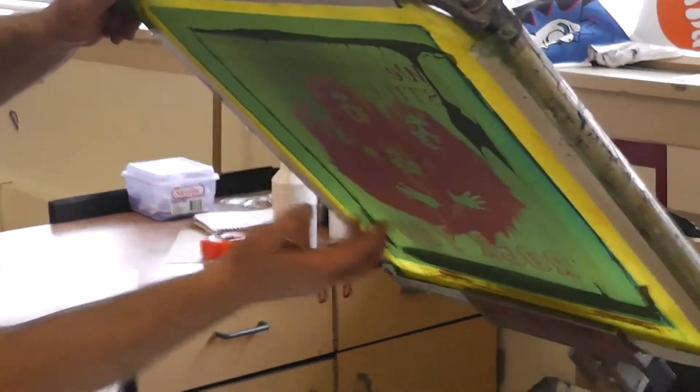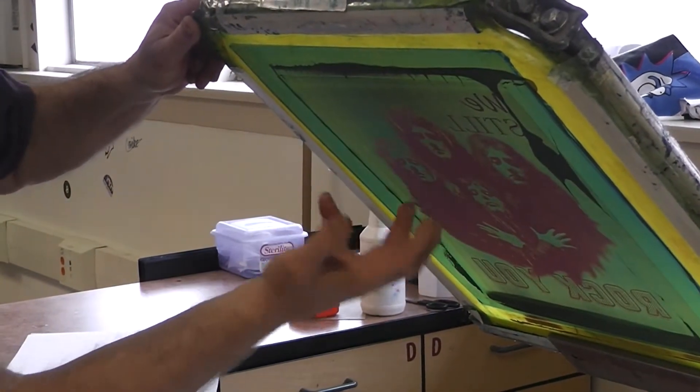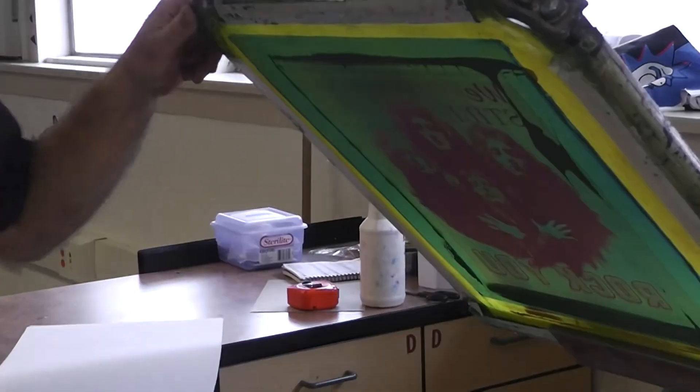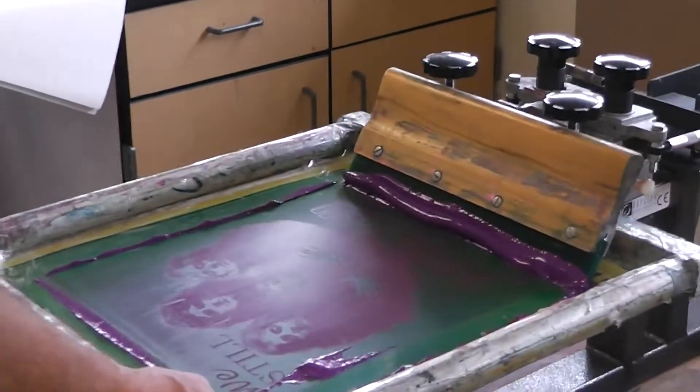Notice that the screen is up off the platen. So what I've done is I've just loaded that stencil up with ink. You can see it underneath where the mesh was yellow. Now the mesh is filled with the ink color. In this case, purple. Flood once. Yeah, only flood once.